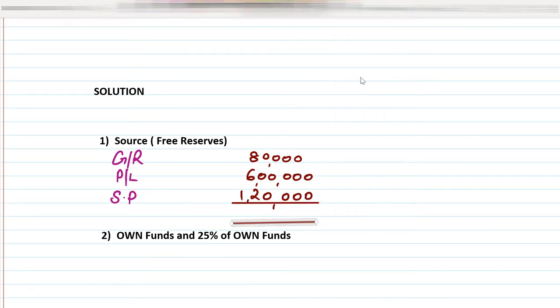We add all these together to get the total sources. The total free reserves comes to 8 lakhs. This will be considered as Alphabet A. Working Note 1 was sources — we added general reserve, profit and loss, and securities premium.